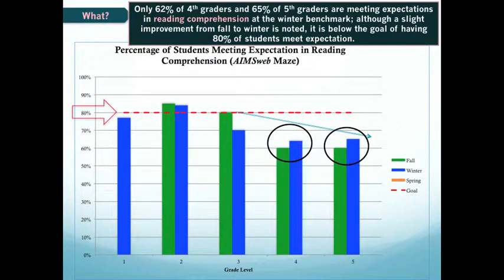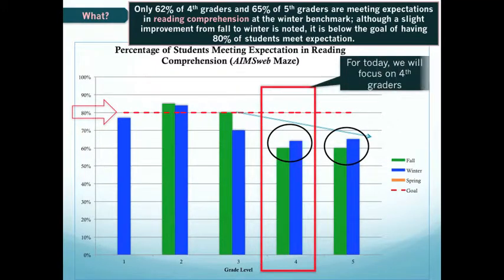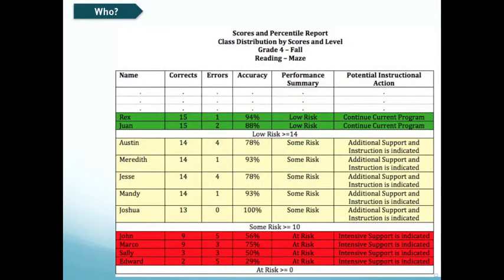So our 'what' now becomes reading comprehension. For the rest of this example, we're going to focus just on our fourth graders. Let's start unpacking this a little bit more and pull up our data to look at our particular students. We're looking at fourth grade — this is a list of students ranked based on whether they're meeting their expectation, whether they're falling in a low-risk, some-risk, or intensive-risk zone.